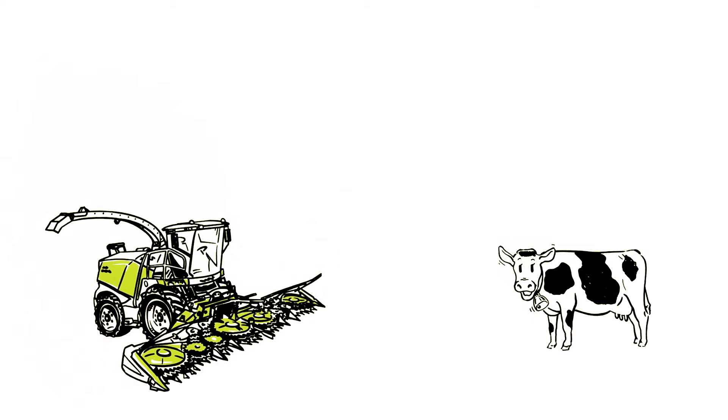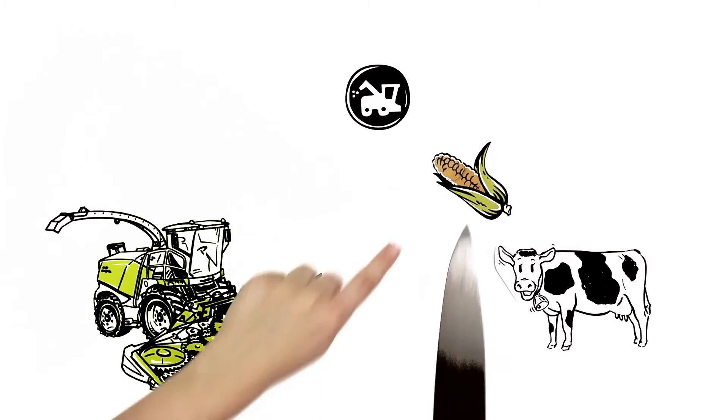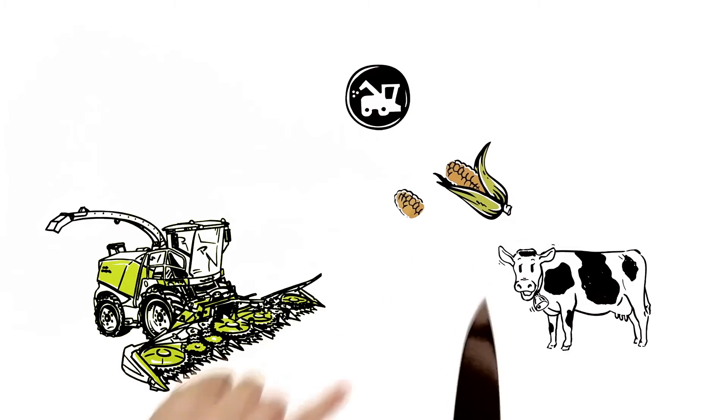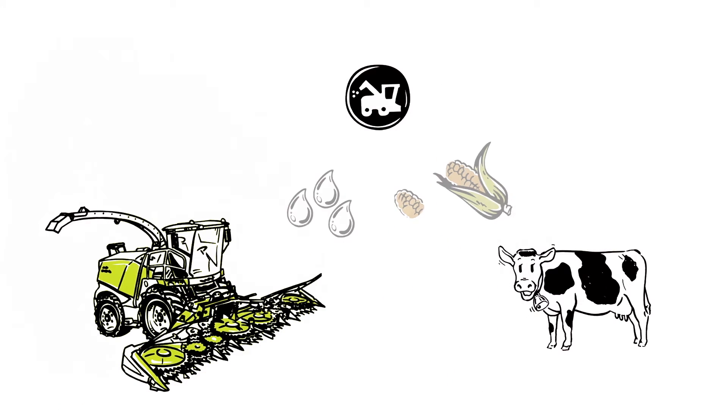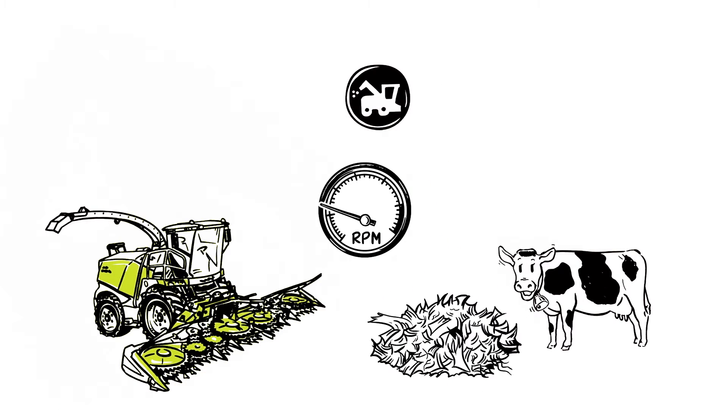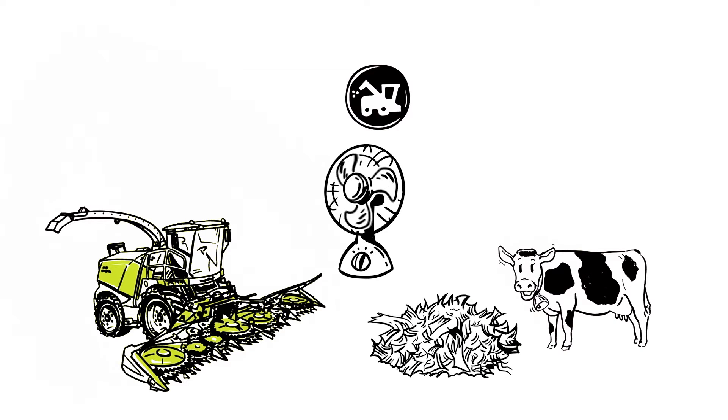When chopping silage to feed his dairy cows, Luke's Jaguar 4-H Harvester uses a different set of variable-rate harvesting tools. It modifies the chop length according to moisture content, adjusts the power output to accommodate yield volume, and dynamically controls the cooling system based on what's required.